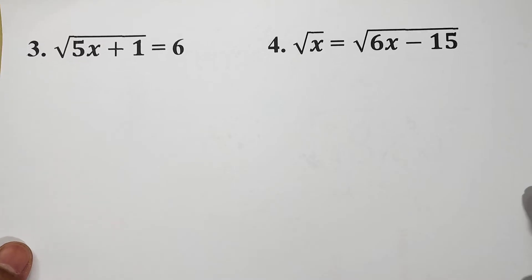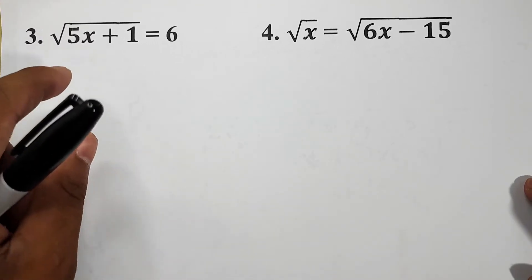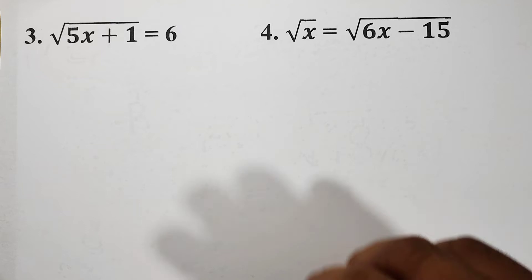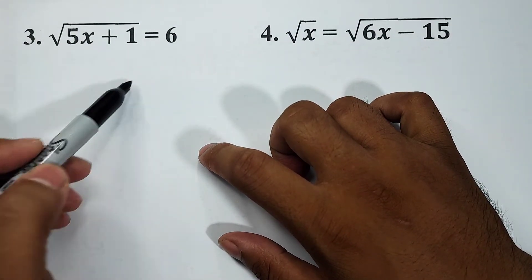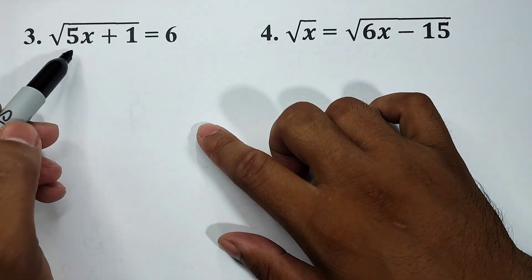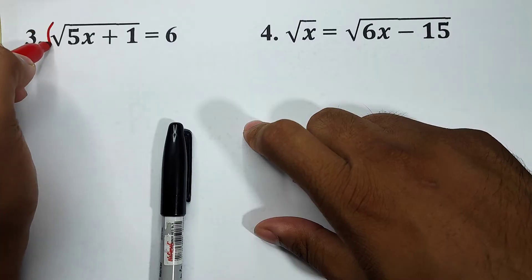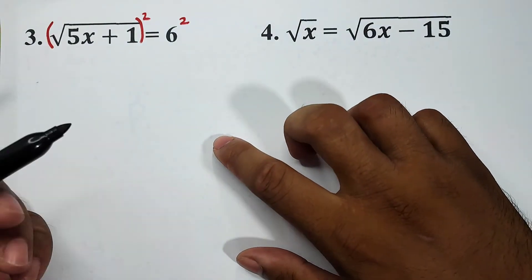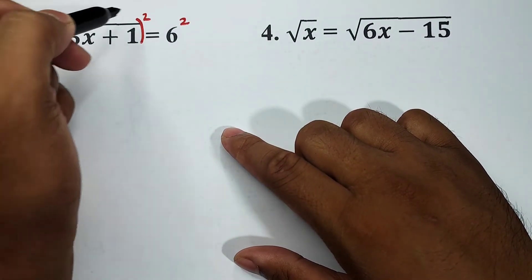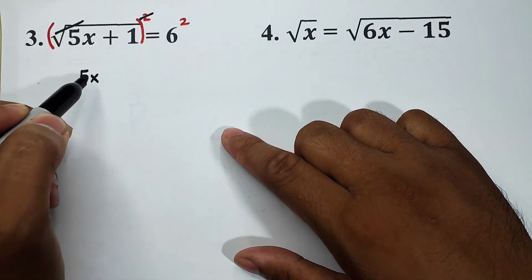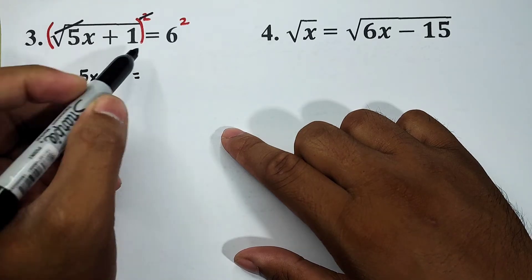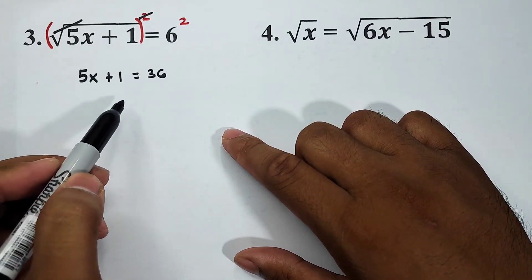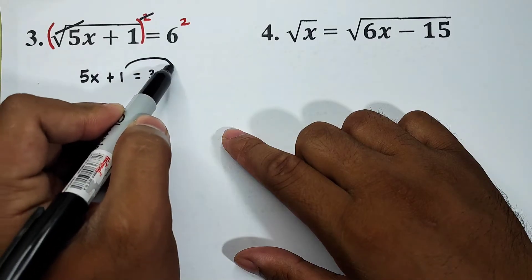These two equations may look hard to solve, but using the rule we can easily eliminate the radicals. First, we have the square root of 5x plus one is equal to six. To eliminate this radical sign we will square both sides of the equation. Based on the law mentioned earlier, we can eliminate the radical and this becomes 5x plus one is equal to six squared, which is equal to 36.